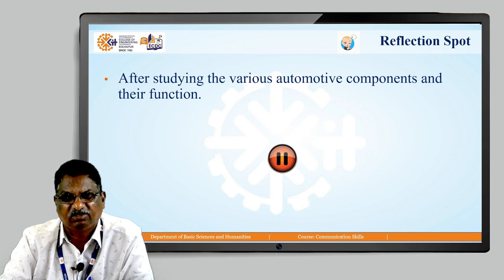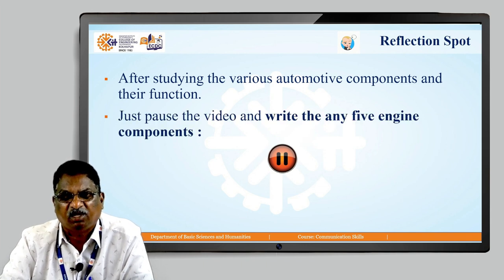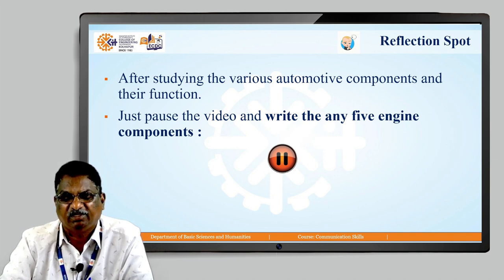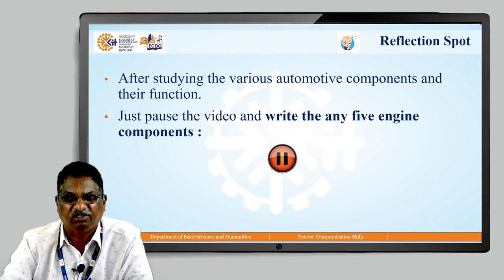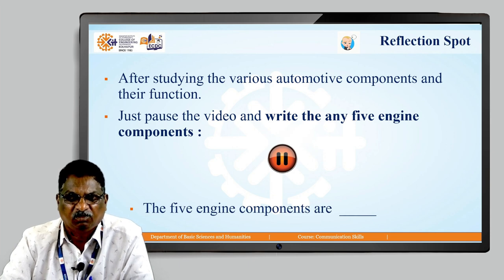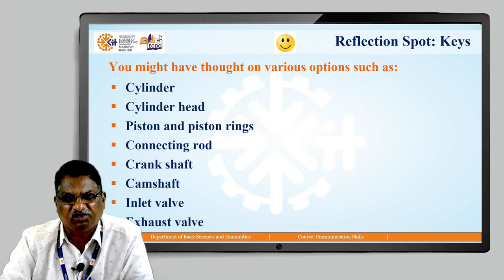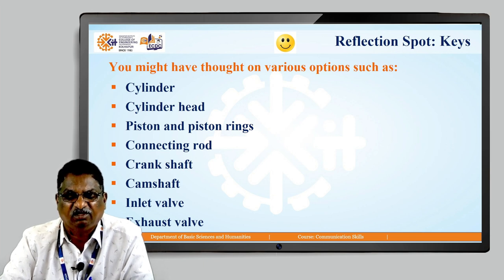Reflection: after studying the various automotive components and their functions, pause the video and write any 5 engine components. The 5 engine components are: cylinder, cylinder head, piston and piston rings, connecting rod, crankshaft, camshaft, inlet valve, and exhaust valve — these are the important components of the engine.